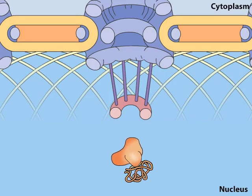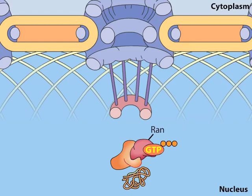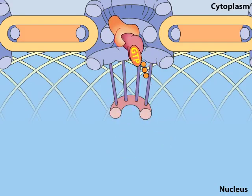At the nuclear side of the pore, the complex is disrupted by the binding of a protein called RAN to importin. RAN carries a molecule of GTP. This binding changes the conformation of importin, which then releases its cargo protein into the nucleus. The importin-RAN complex is then re-exported through the nuclear pore.